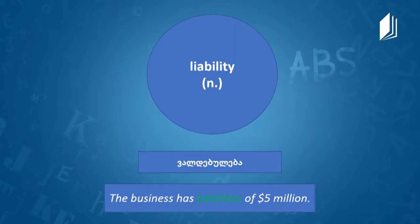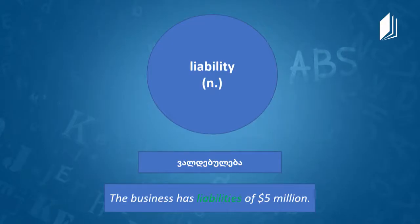The next word is liability. Liability is a noun, and in Georgian it is 'Valdebuleba.' It's a slightly negative word — the responsibility of a person, business, or organization to pay or give up something of value. For example, debt is a liability. Example sentence: 'The business has liabilities of $5 million.'